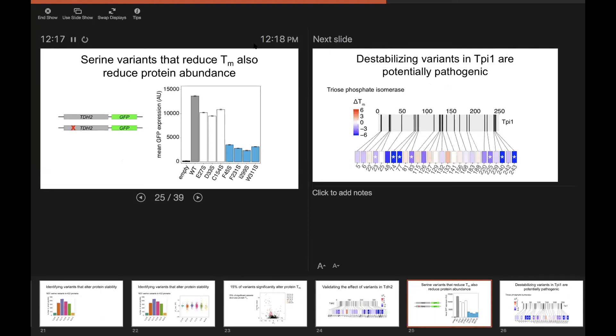And what you can see is that all four of the variants that had large effects on TM strongly reduced the protein abundance. And this was true even at 30 degrees, suggesting that they really are destabilizing mutations, whereas the mutations that had no effect on TM had only a small effect on protein abundance.